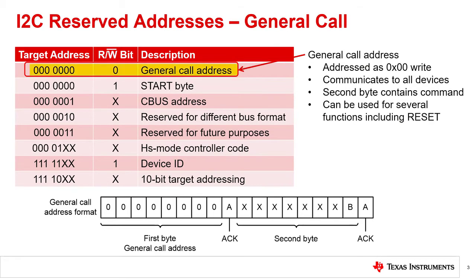The functions called with these reserved addresses are options for devices, and are not necessarily available in all I2C devices. The first reserved address is I2C address 0 and is the general call address. A write from the general call address is used to address all the devices connected to the I2C bus at the same time. Not all devices are designed to respond to the general call address. However, if the device does respond, then it may process a second byte in the following bytes after the general call.